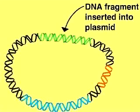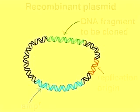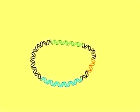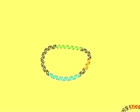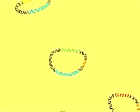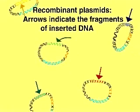Each of these recombinant plasmids contains the inserted DNA fragment, an ampicillin resistance gene, and a replication origin. A pool or library of circular recombinant plasmids is thus created. Each plasmid carries a unique fragment of foreign DNA, as indicated by the colored arrows.